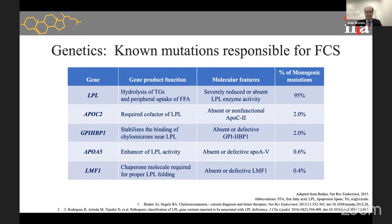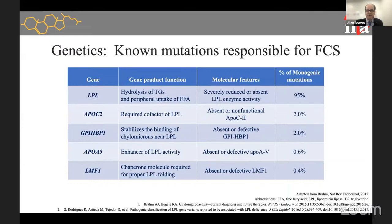The most common cause — 95% of cases — is two alleles with mutations for lipoprotein lipase. There are four other genes that affect triglyceride metabolism: ApoC2, GPI-HBP1, ApoA5, and LMF1, which are much more rarely the cause. Any one of those mutations combined with a lipoprotein lipase deficiency allele, or any two of these gene mutations together in a recessive fashion, can also cause chylomicronemia.